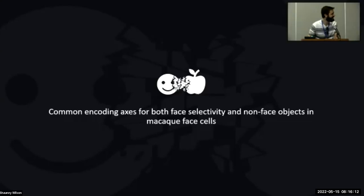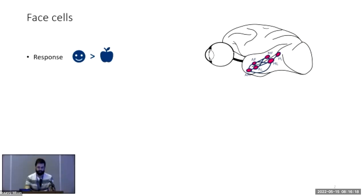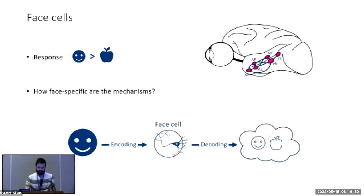Face cells are neurons that respond more to faces than to other objects. The face cells I'm going to talk about are the ones found in face patches in the macaque ventral stream in inferior temporal cortex. The question I will be addressing is how face-specific the mechanisms are behind face cell responses.